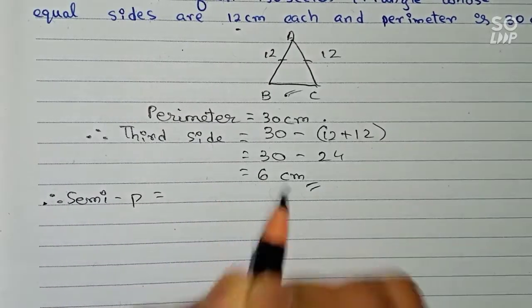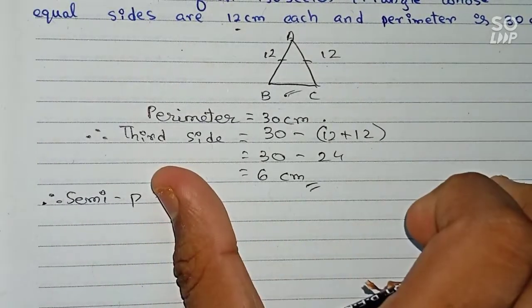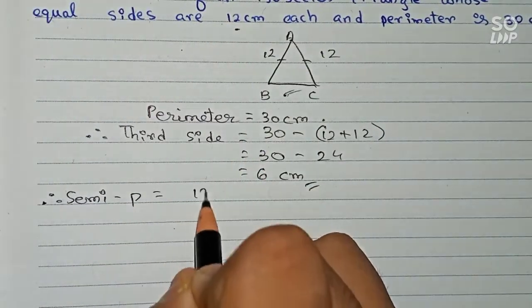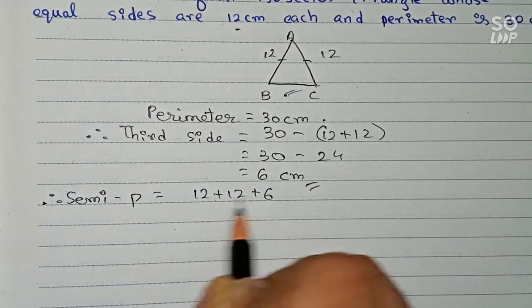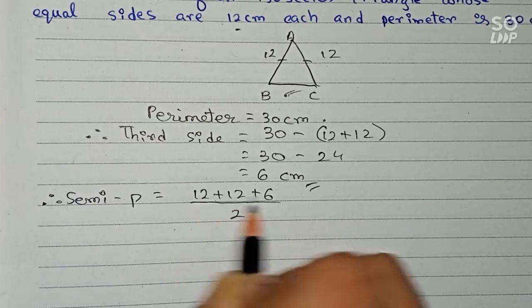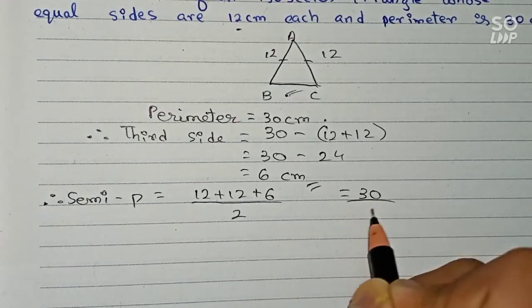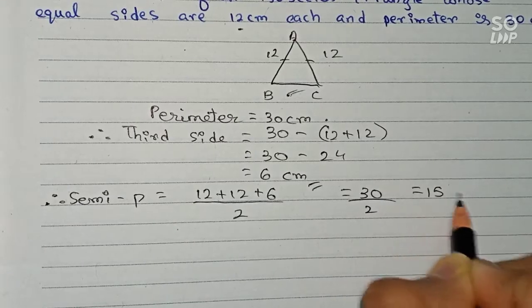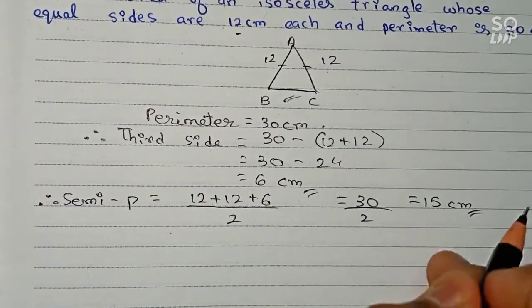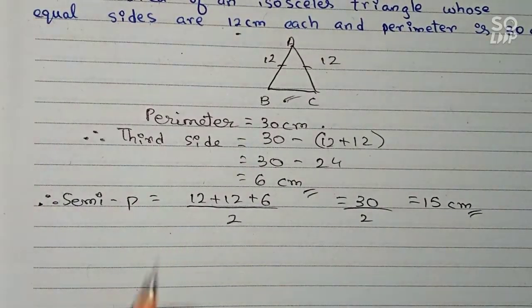So therefore semi-perimeter will be equals to sum of all three sides divided by 2. So therefore 12 plus 12 plus 6 divided by 2. 12 plus 12 is 24, 24 plus 6 is 30. So 30 by 2, that equals 15. So 15 centimeters will be the semi-perimeter.